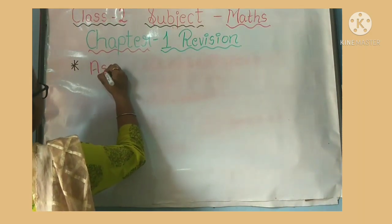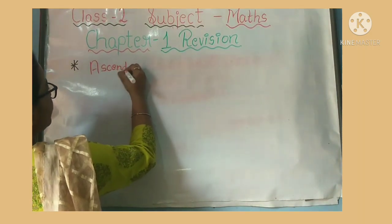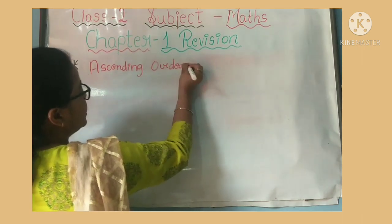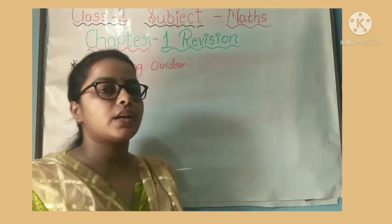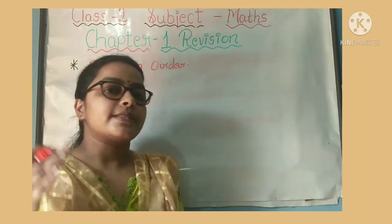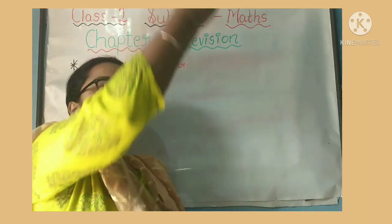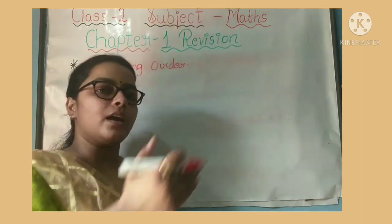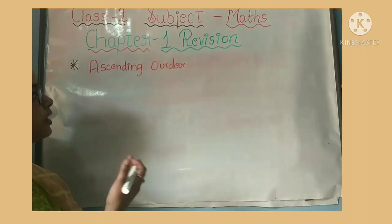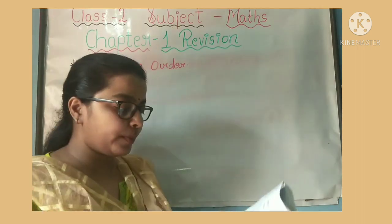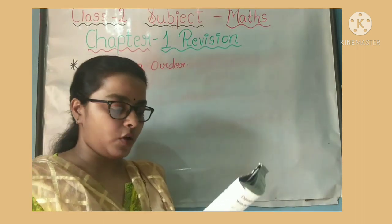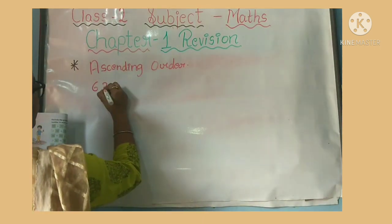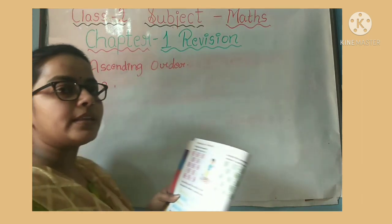Ascending order means: chote se bada — arranging from small to big. When you start to arrange, you go from smallest to largest. So ascending means: small to big — chote se bada. This is what you have read in the previous class. Arrange the numbers in ascending order — here you have numbers given and you arrange them. For example: 63, 81, 29, 30, 75.